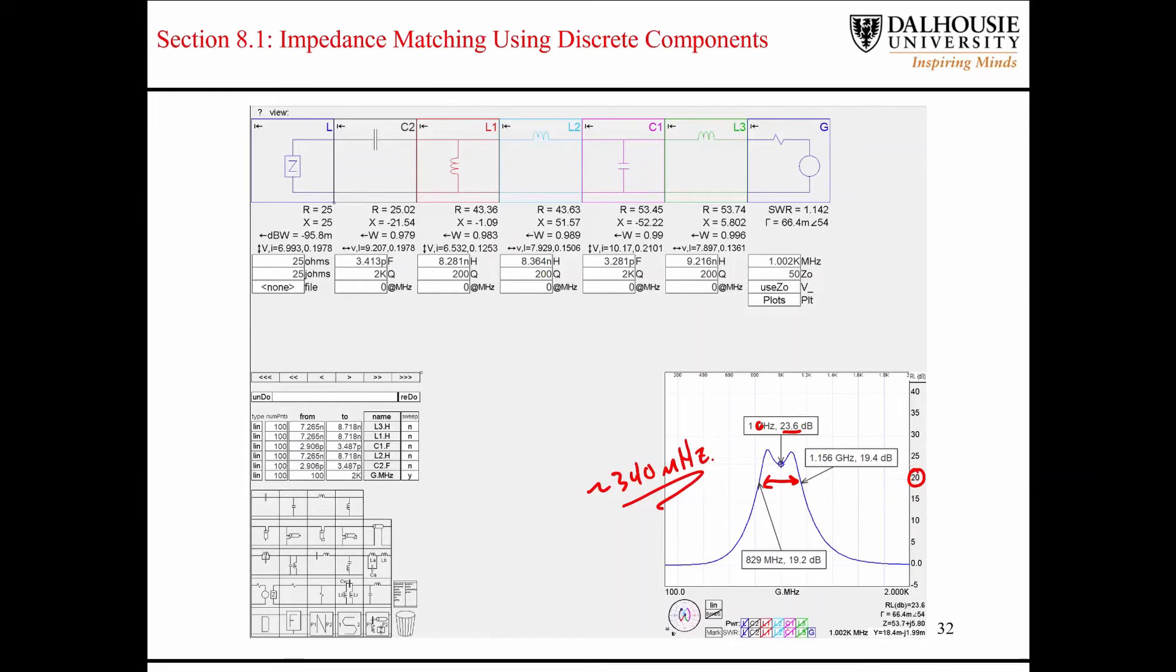There's a couple benefits and a couple drawbacks of using broadband matching networks like this. The first drawback is the fact that here we have the Q of our components, or of our inductors in particular, set to a value of 200. That's a little high for high-frequency systems. A more reasonable Q factor for the inductor would be around a Q of 50 or something like that. When it comes to reactive components, Q is going to be equal to the reactance divided by the resistance. The Q value for a reactive component is a measure of its lossiness. So, as the resistance goes up, the Q goes down.